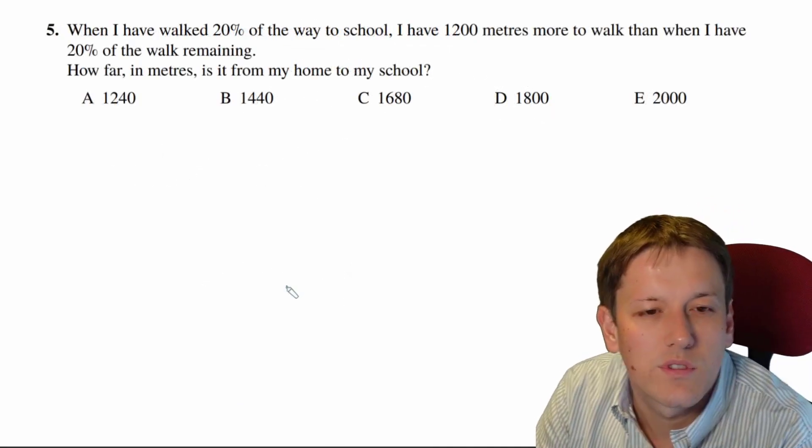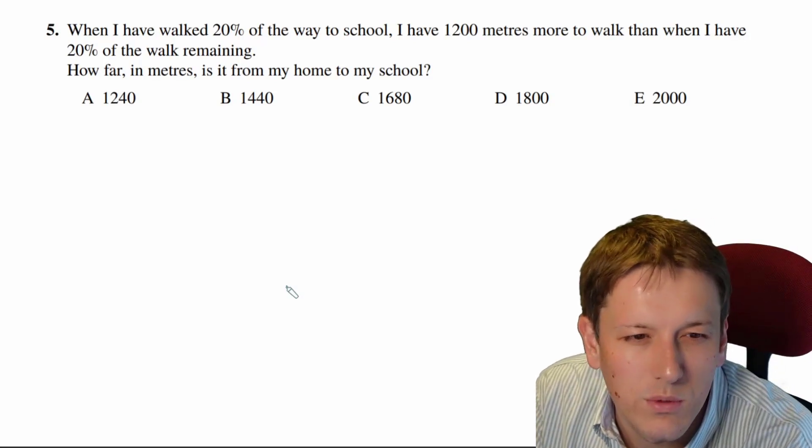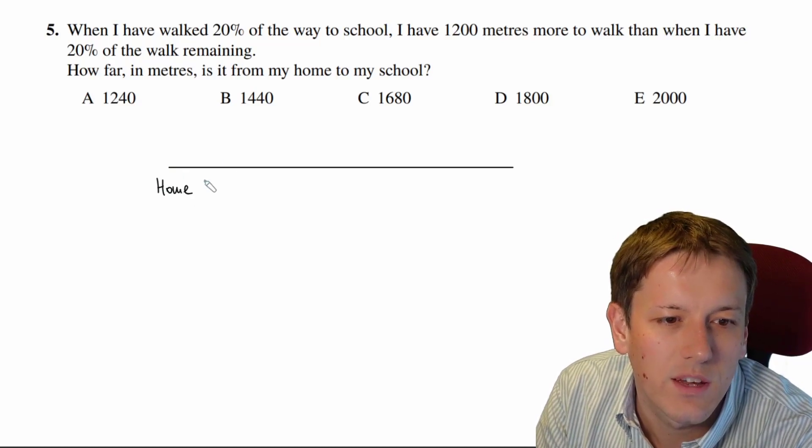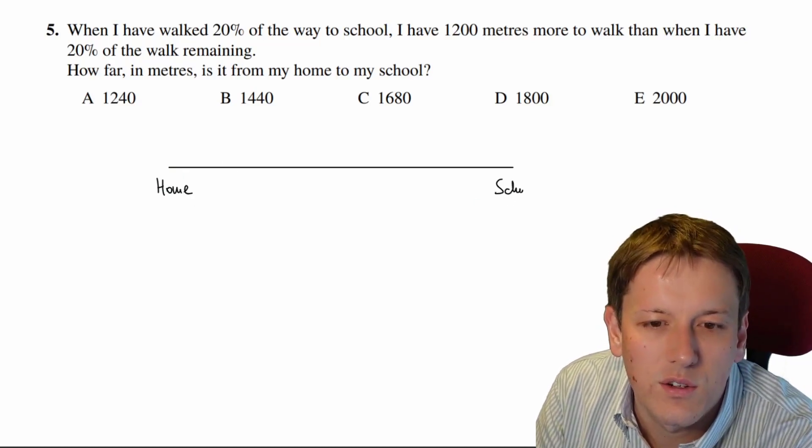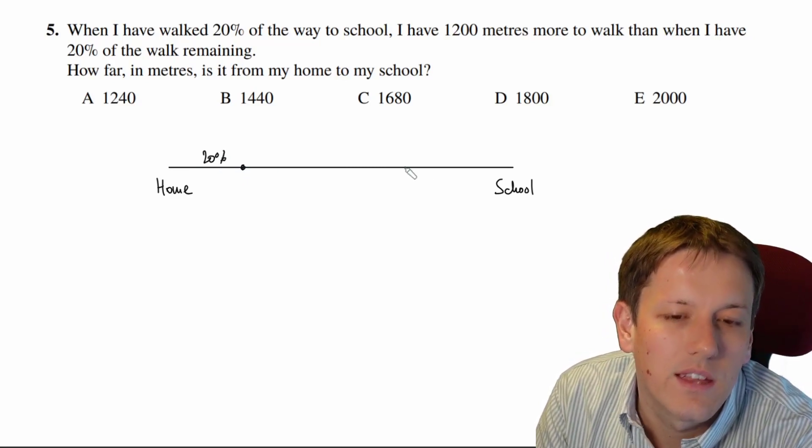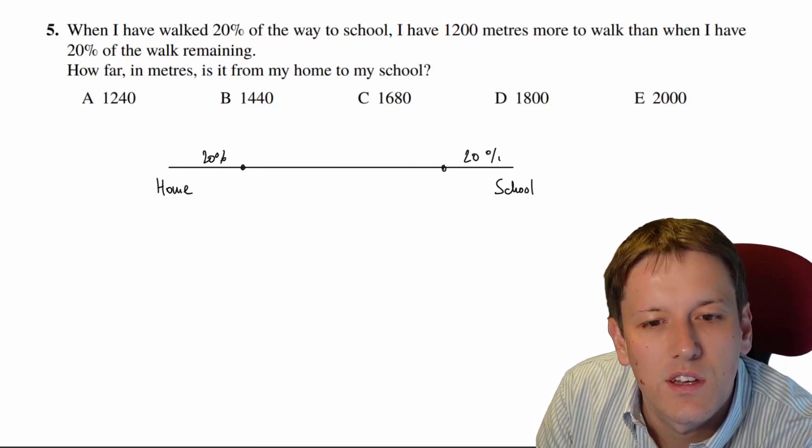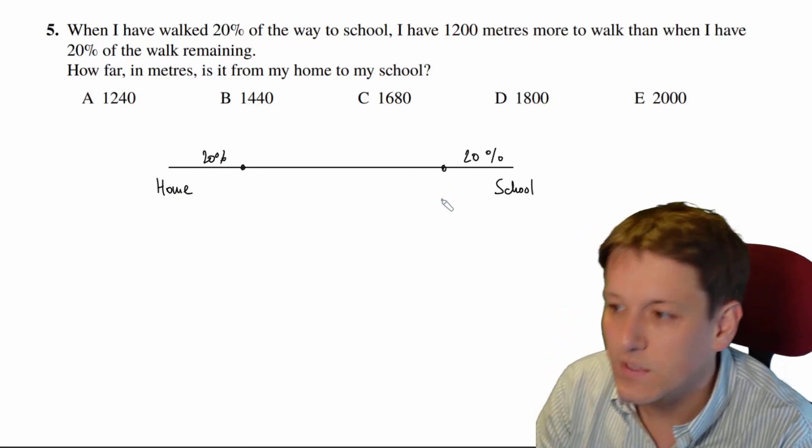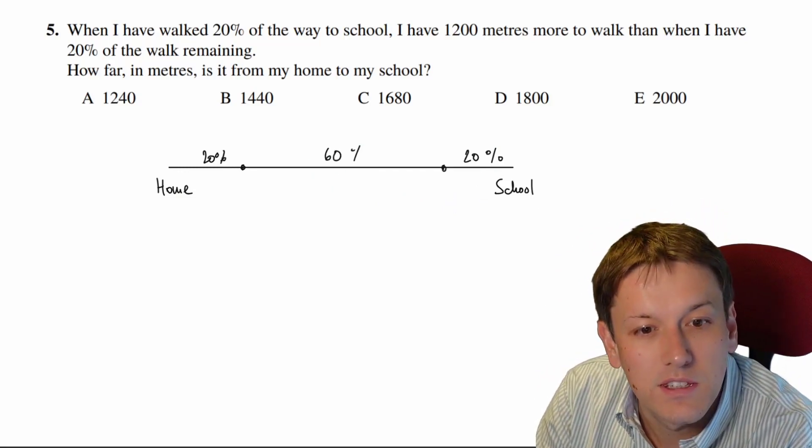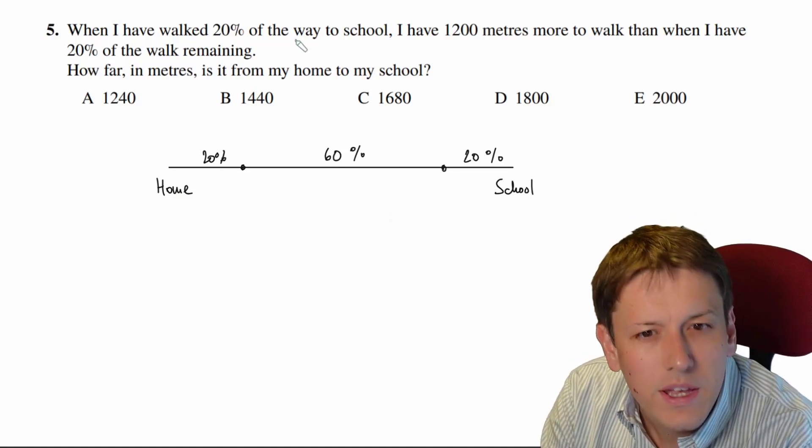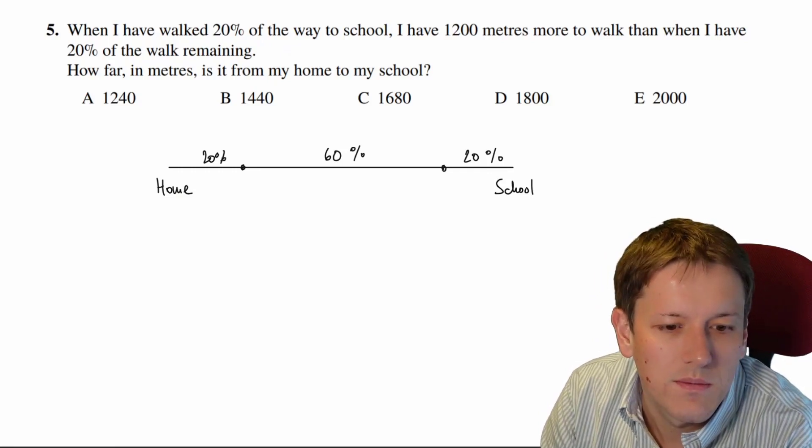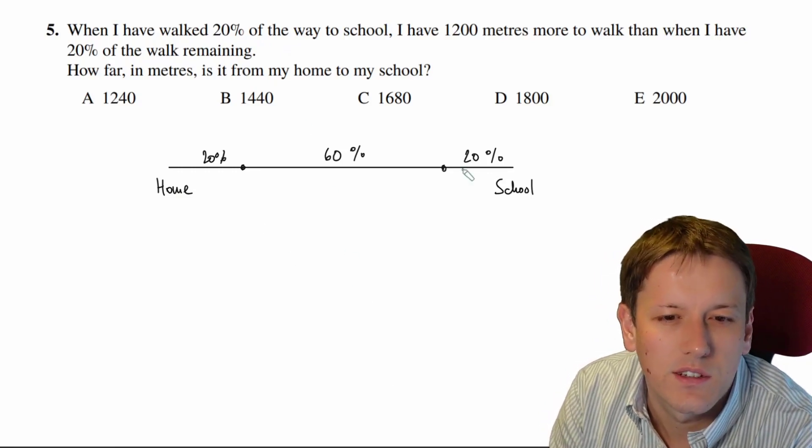Question 5, this is when I've walked 20% of the way to school, I've got 1,200 metres more to walk than when I have 20% of the walk remaining. I'm going to have a diagram just to help us see what's going on here, which has home on it, and it's got school on it, and there will be these two points here, I'll just draw roughly, where I've got 20% of the way there, and where I've got 20% of the way left, and so if those two are 20% each, that's 40% in total, so it must mean that this bit in the middle here is 60%. Now, it says when I've walked 20% of the way to school, I've got 1,200 metres more remaining than when I have 20% of the walk remaining.